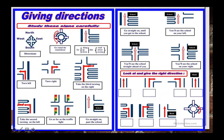Kali ini kita akan belajar tentang giving direction. Kalian perhatikan arah-arah berikut ini: ada north, east, south, same west. Lalu ada go round the roundabout, kemudian ada go along, go up, go down this road, this street, this avenue.